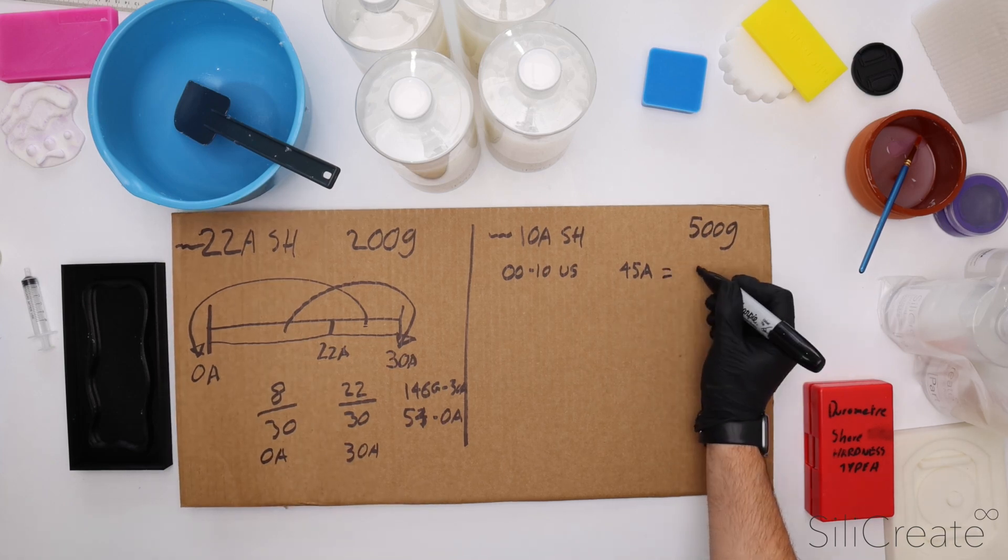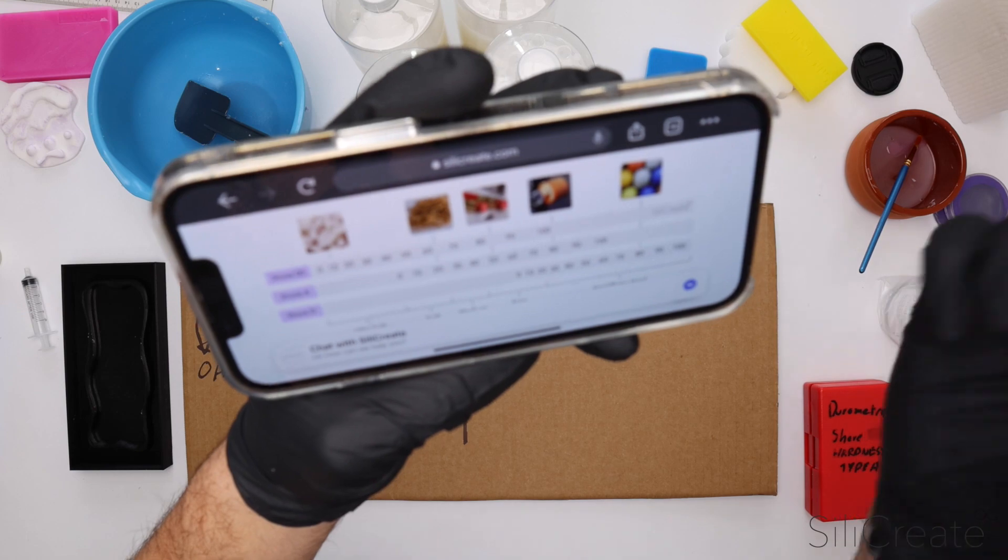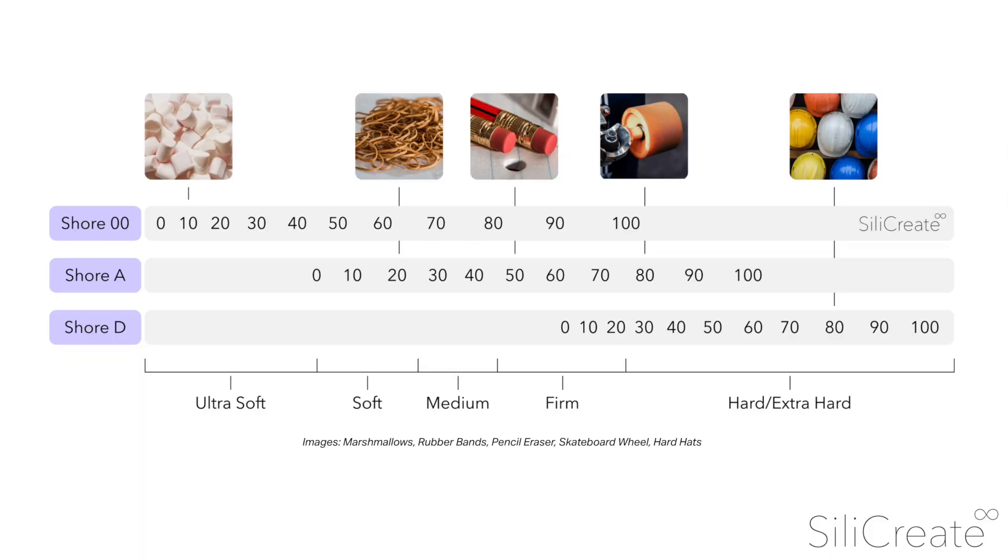So 45A equals, and you can kind of look this up on shore hardness charts. We've got one on our website and there's some tables and stuff like that online. As you can see shore A45 is going to be just above 0080.